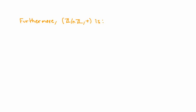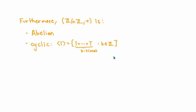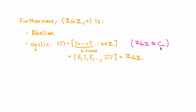Since we've checked all three properties, Z mod nZ together with addition is a group. It's also an abelian group, which follows immediately from the definition together with the commutativity of integer addition. Furthermore, this group is cyclic. The subset generated by the residue class 1, using additive notation, gives 0·1, 1·1, 2·1, all the way up to (n−1)·1, which by the definition of addition of residue classes gives all elements of Z mod nZ. So 1 is a generator, and Z mod nZ is isomorphic to the cyclic group of order n.